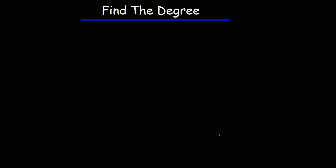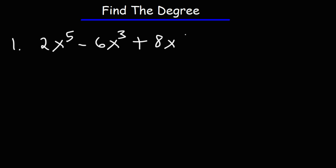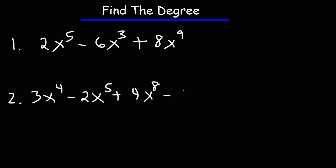For the sake of practice, let's go ahead and work on some more examples. Try these: we have 2x to the fifth power minus 6x cubed plus 8x to the ninth power. And then for the next one, 3x to the fourth power minus 2x to the fifth power. Feel free to pause the video and try these example problems.